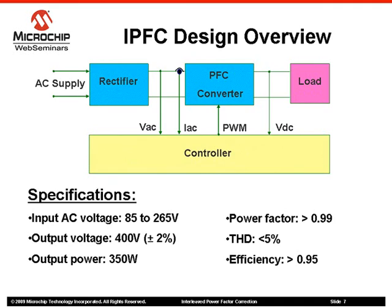As can be observed, the input is an AC supply and the output of the PFC is a DC voltage. An ideal PFC makes sure that its input impedance is purely resistive, which allows maximum use of real power. The feedback signals needed for the control loop are the rectified AC voltage, input AC current, and output DC voltage. The output of the control block is a pulse width modulation, or PWM, signal.